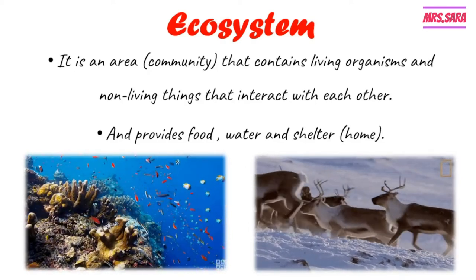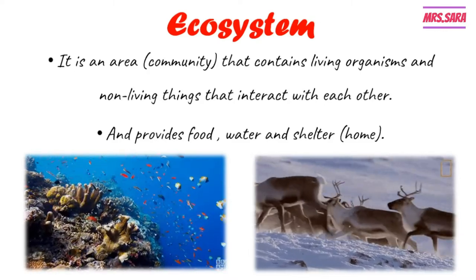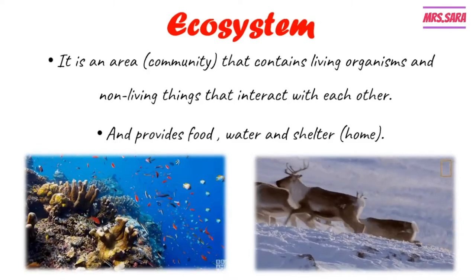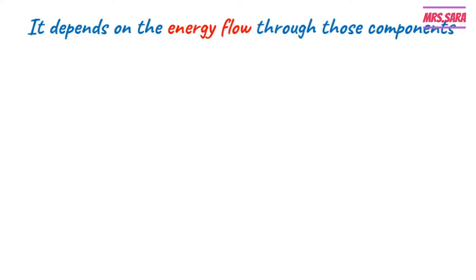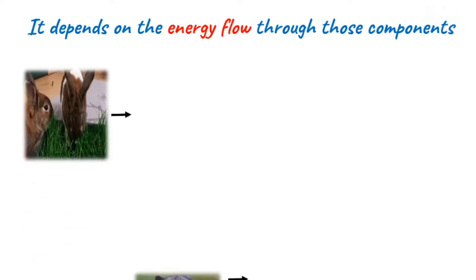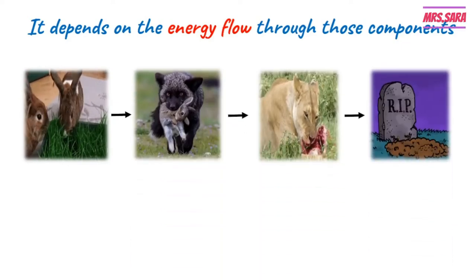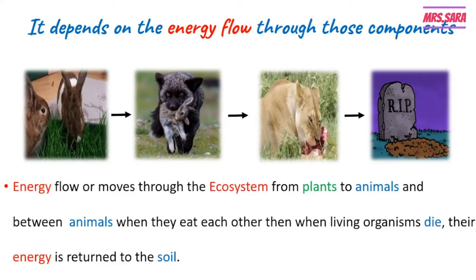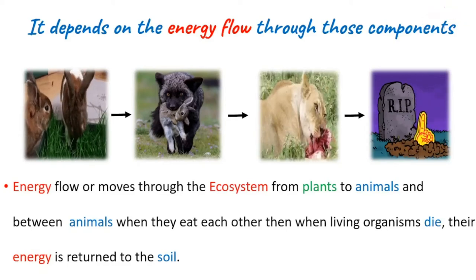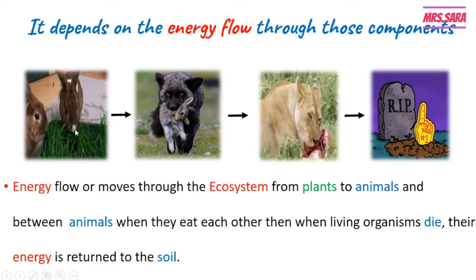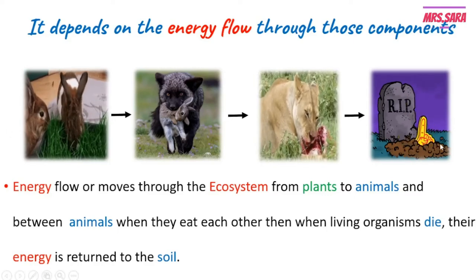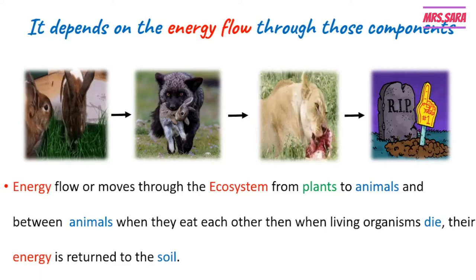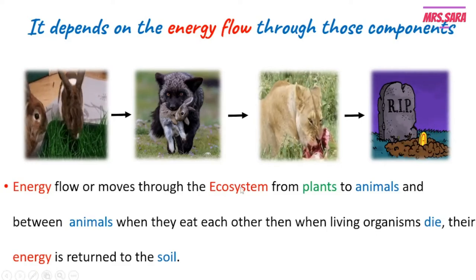The ecosystem depends on something called energy flow. Energy flows through those components. What is the meaning of energy flow? As you can see here, there is a sequence of animals. In this sequence, energy flows or moves through the ecosystem from start — from the plants — and ends with the dying of those animals.